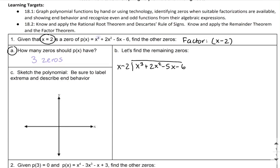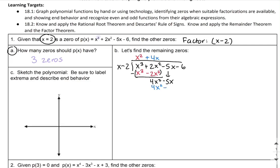What do I have to multiply x by to get x cubed? That's x squared. I distribute x squared to both x and negative 2: x squared times x gives me x cubed, and x squared times negative 2 gives me negative 2x squared. I subtract that and see what I have left over: 2x squared minus negative 2x squared is 4x squared. I bring down my next term, negative 5x. What do I have to multiply x by to get 4x squared? That's 4x. I multiply: x times 4x gives 4x squared, and negative 2 times 4x gives negative 8x.